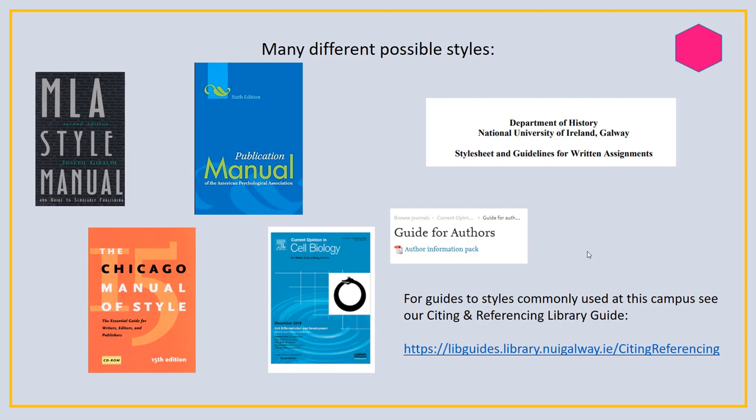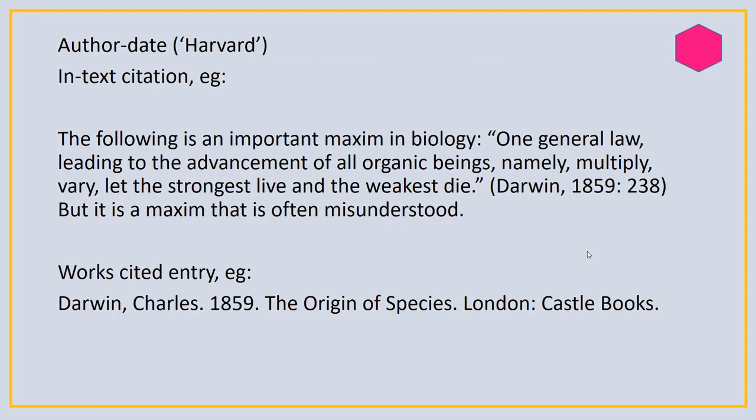For guides to styles commonly used at this campus — Galway — you can see our citing and referencing library guide at the link below. So here's what I mean by styles: the specifics of a reference will look slightly different depending on what style you're using. The most used style on campus is called Harvard, otherwise known as author-date, and here we have an example of an in-text citation and then the works cited entry.